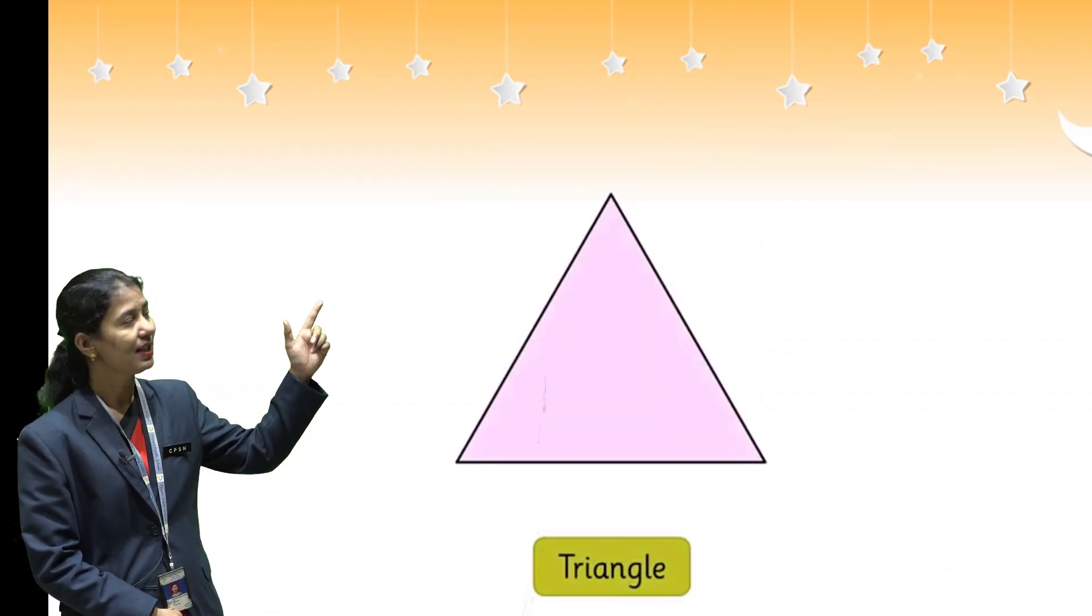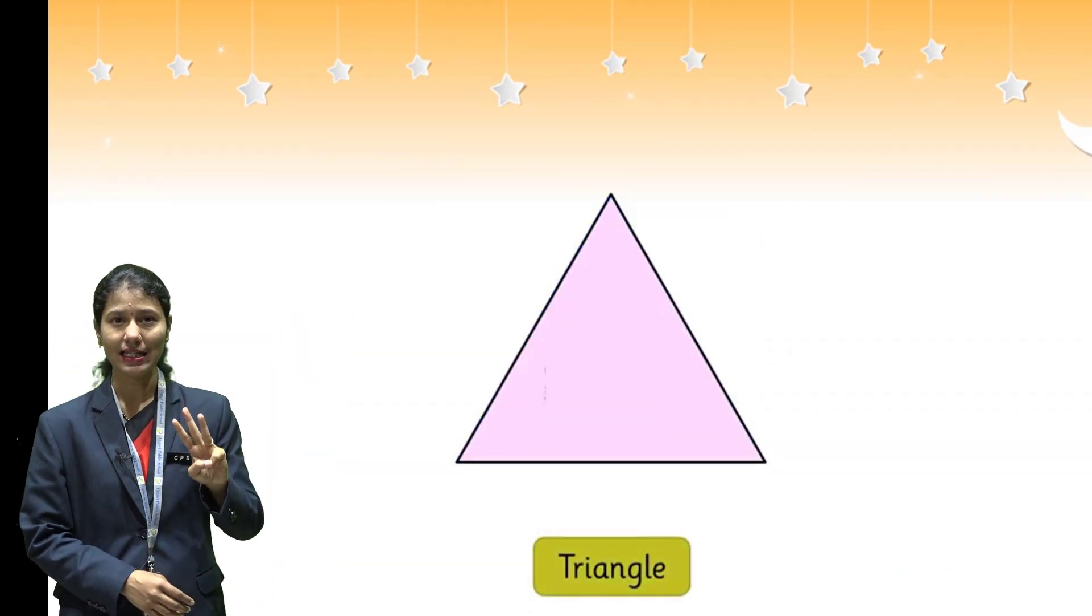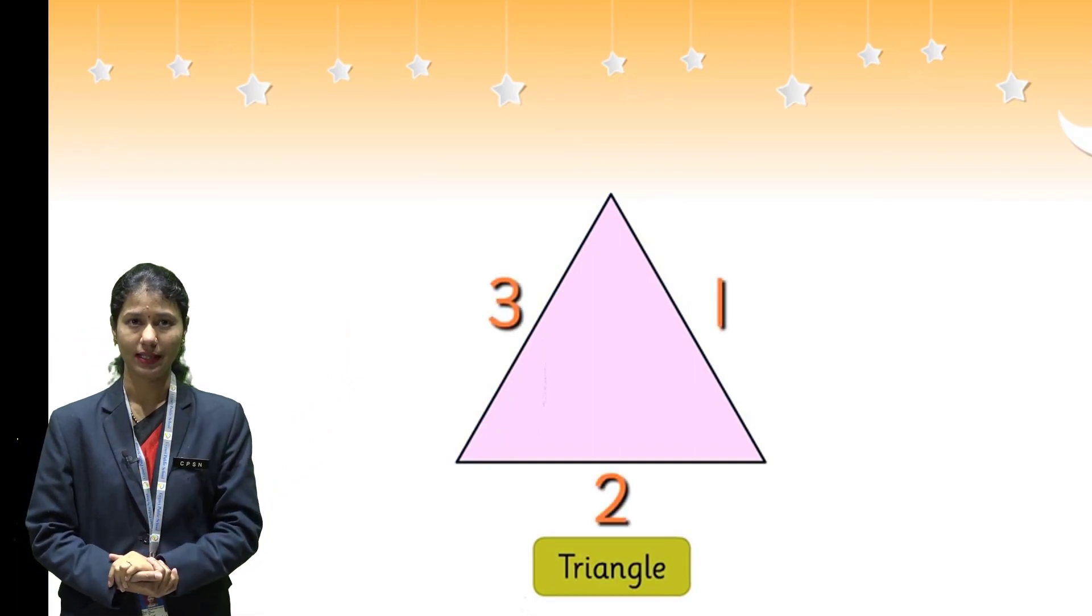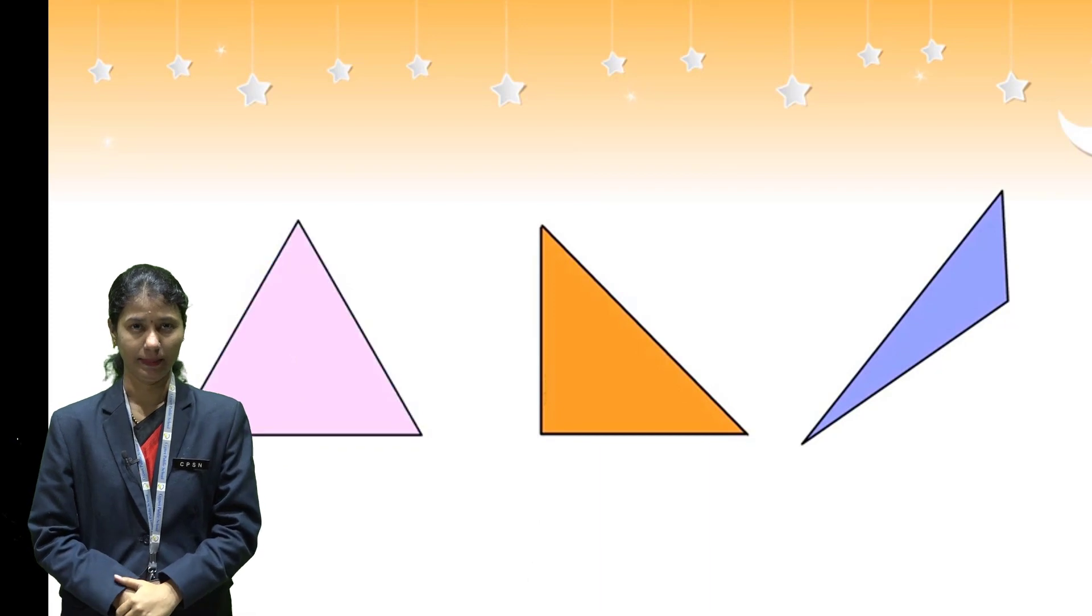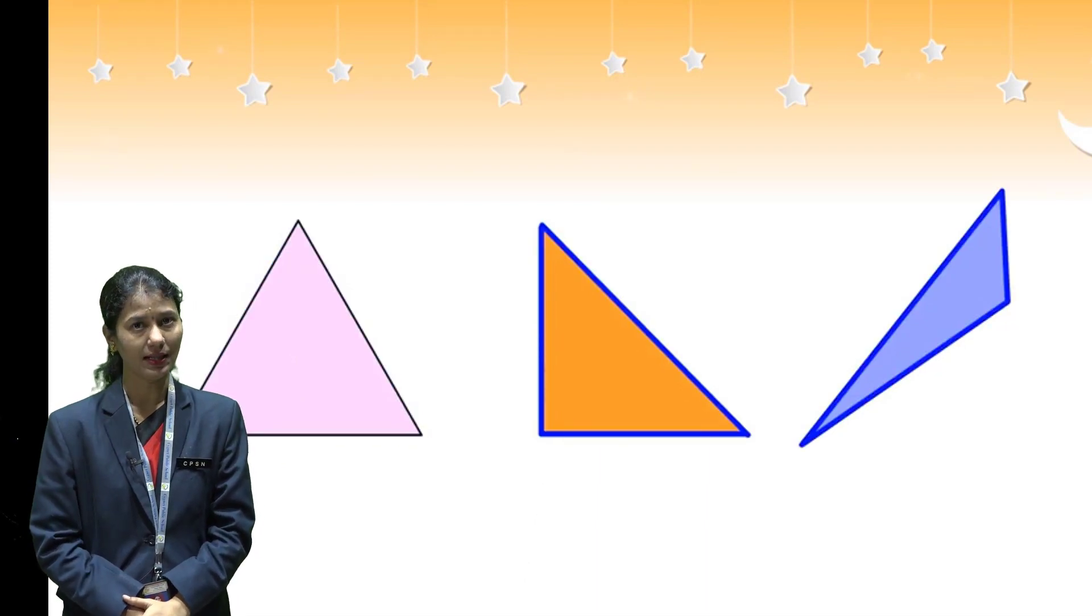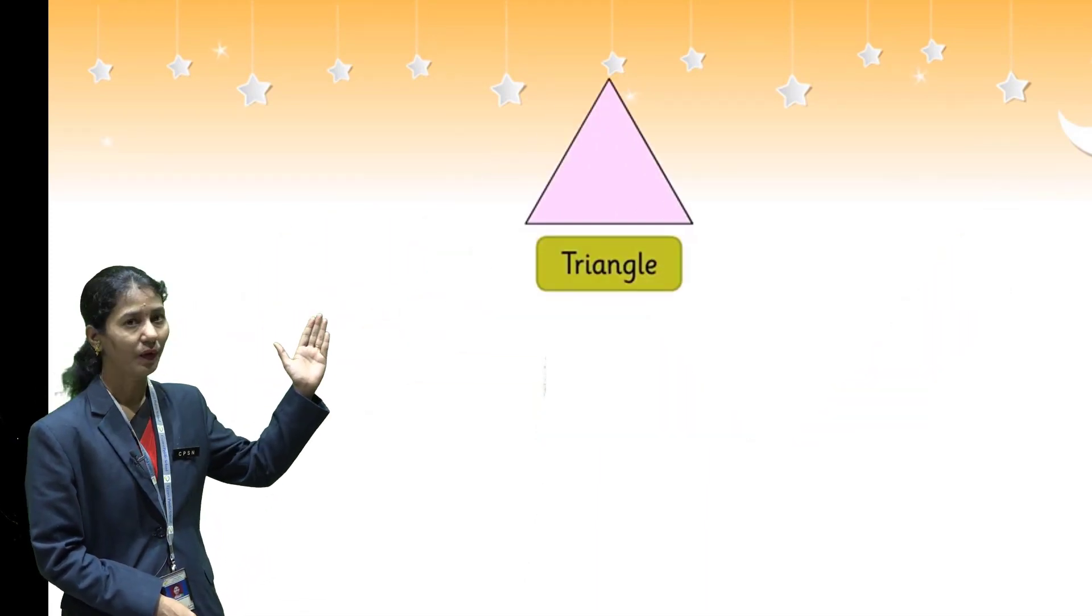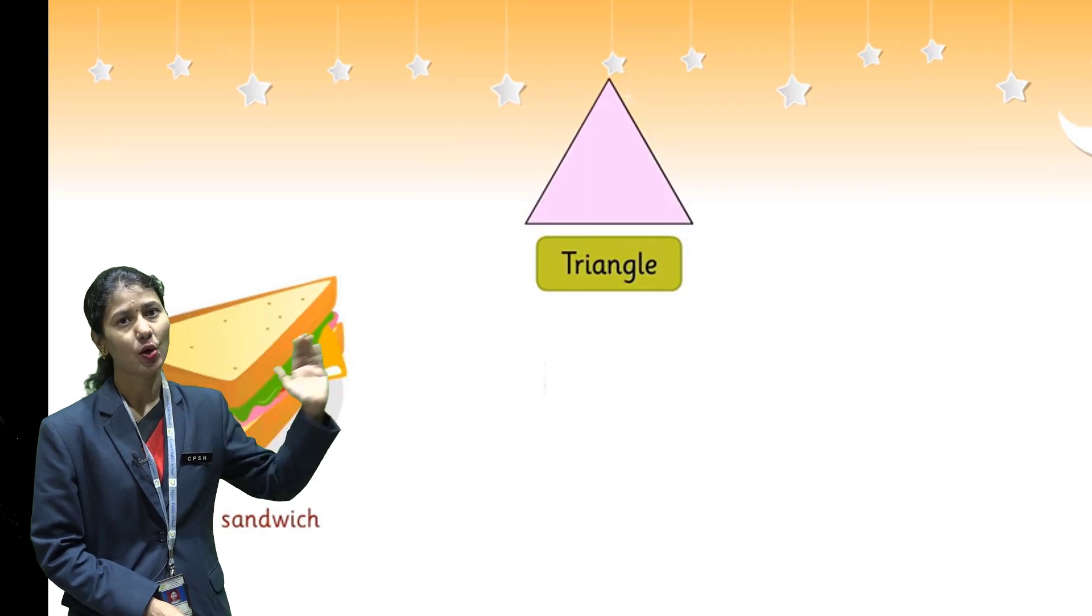Now, third one, this is called triangle. Triangle has three sides and three corners. Each side may or may not be equal. Examples of triangle are a piece of sandwich and slice of pizza.